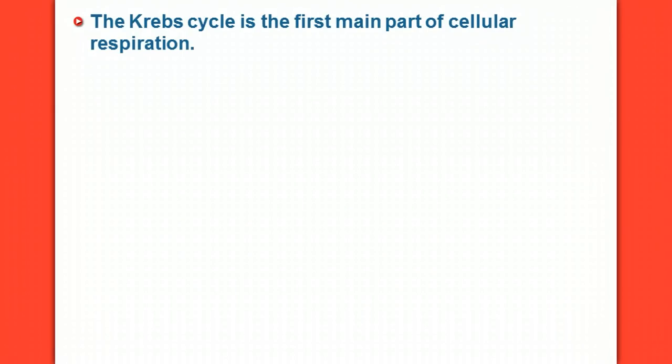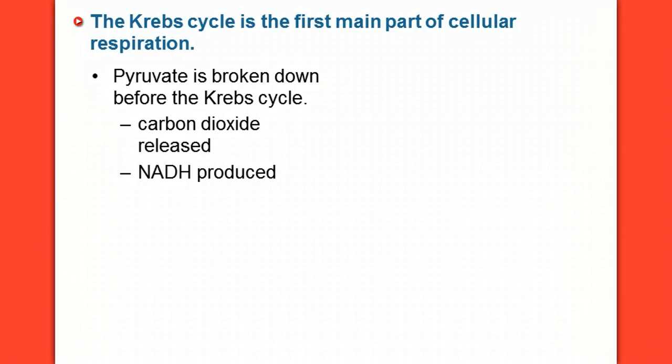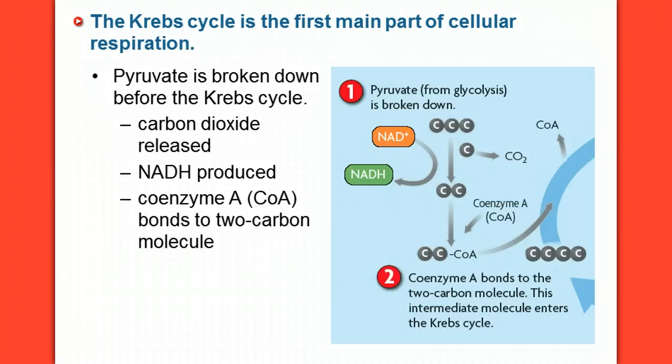The Krebs cycle, just like the Calvin cycle, is the first main part of cellular respiration. Pyruvate is broken down before it actually gets to the Krebs cycle. So I'm going to click through these because I want to look at the picture at the same time. You can see here in step one, pyruvate from glycolysis is broken down.